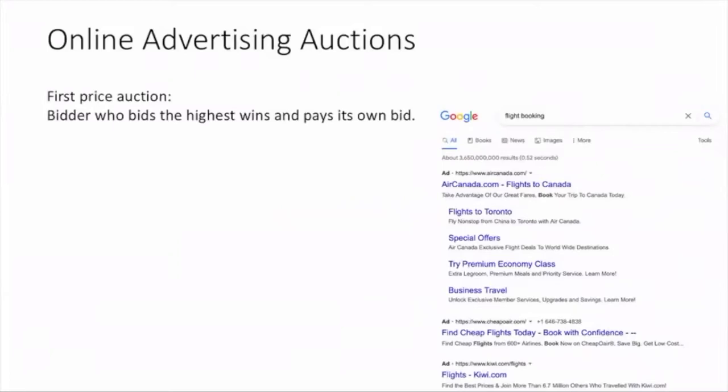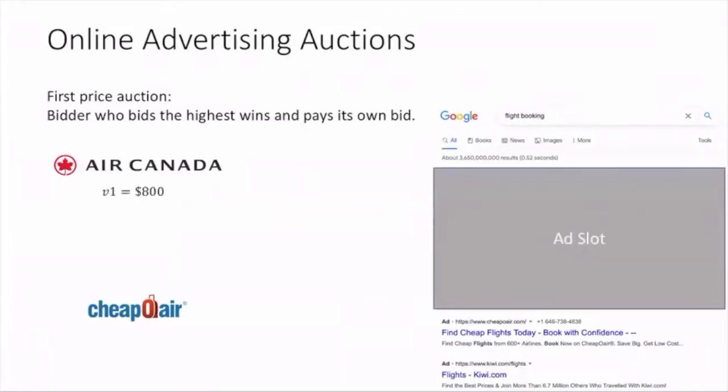Let's see an example in Google Ad Auction. Two advertisers, LCanada and Triple L, are bidding for the first ad slot on this Google page. Their value towards the ad slot is $800 and $600. What will they bid? Will LCanada bid its true value $800? The answer is no.